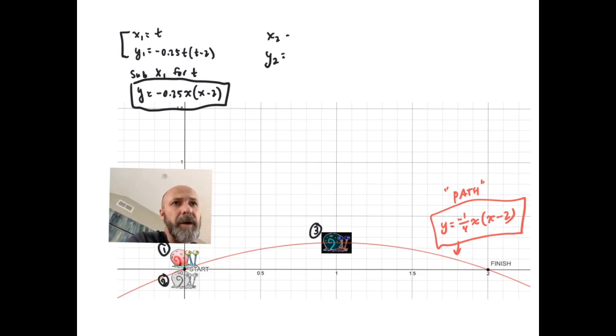The second snail, this is the black and white version of Gary, I used x₂ = 2t, and y₂ was a little different then. y₂ was -t² + t.